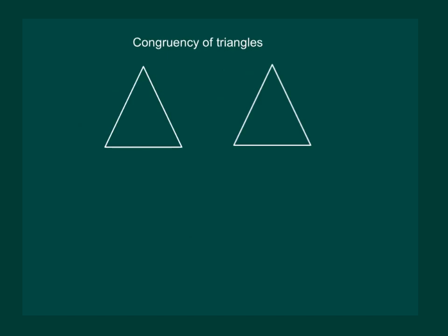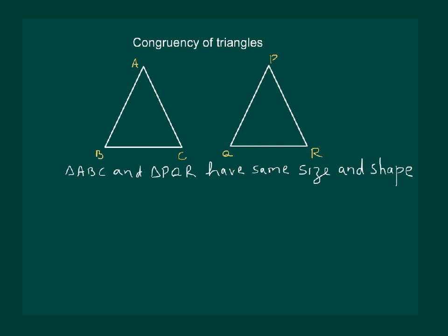Similarly, two triangles are congruent if they are copies of each other and when they are superimposed, they cover each other exactly. So we can see that both the triangles are congruent. Now let us name them and write symbolically. We will say that triangle ABC and triangle PQR have same size and shape. So triangle ABC is congruent to triangle PQR.